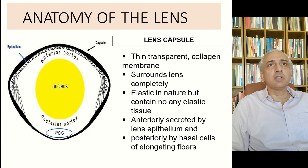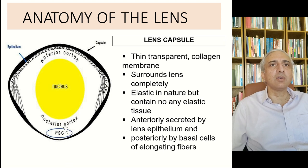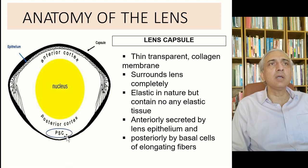The lens capsule is a thin, transparent collagen membrane surrounding the lens completely. It is elastic in nature but contains no elastic tissue. It is anteriorly secreted by the lens epithelium and posteriorly by the basal cells of the elongated epithelium.